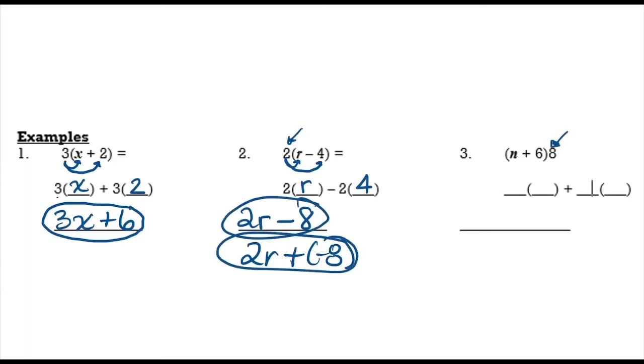Don't get thrown off by the fact the number that's being distributed is after the parentheses. So in this one we're going to do n times 8 and we're going to do 6 times 8. So n times 8, don't put n8, that's gross, put 8n. Always put the coefficient ahead of the variable. And then 6 times 8 is 48. And that's all you can do with this problem, 8n plus 48. Like I said, don't write n8, that's really ugly way of writing an algebraic expression or a term.